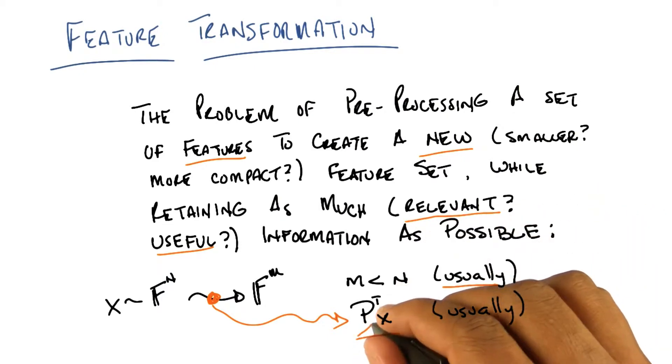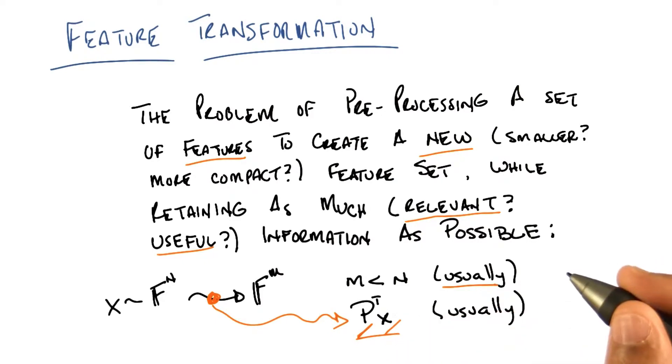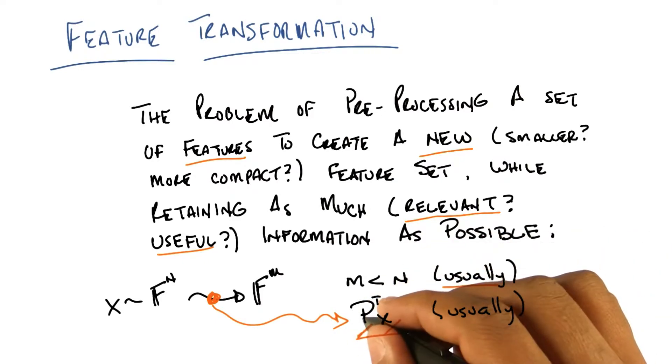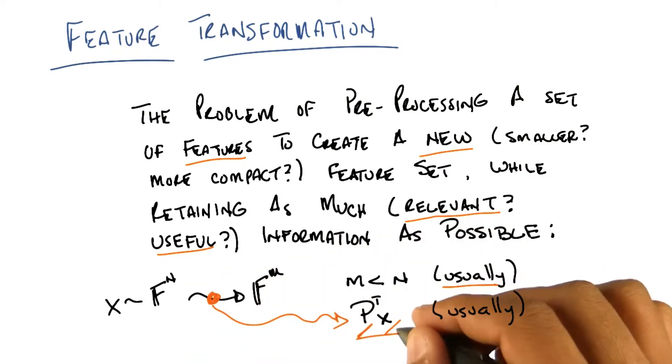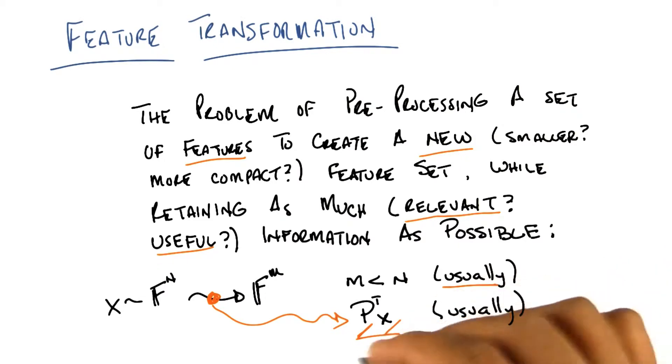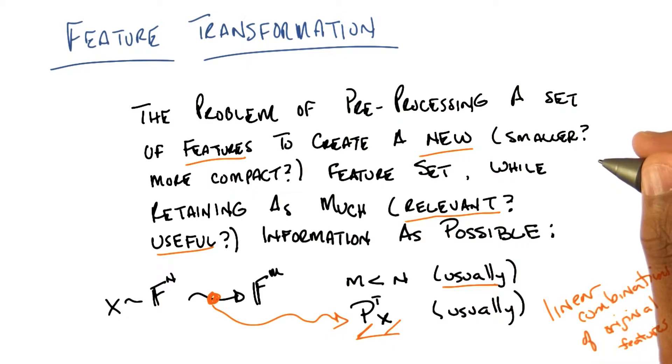So the goal here is to find some matrix P such that I can project my examples, my points in my instance space, into this new subspace, typically smaller than the original subspace. And I'll get some set of new features, which are combinations, and in particular linear combinations of the old features. Does that make sense? I think so. So then that P matrix would want to be n by m?